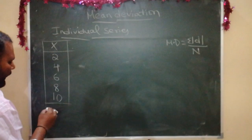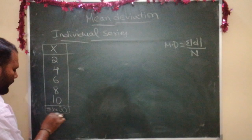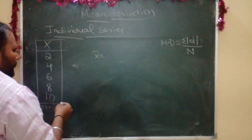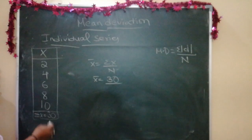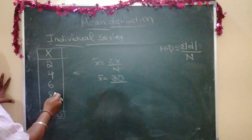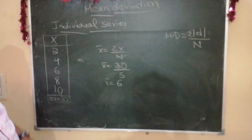So we will see that sigma x is equal to 30 here. We know the formula for arithmetic mean: x-bar is equal to sigma x divided by n. That is, x-bar equals 30 divided by 5 — n is the number of observations, which is 5 — so x-bar is equal to 6.